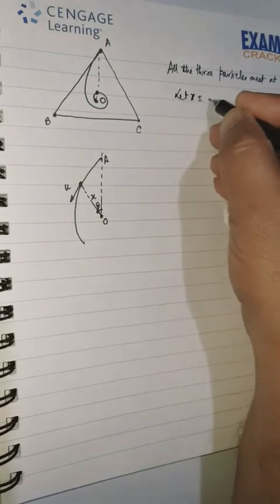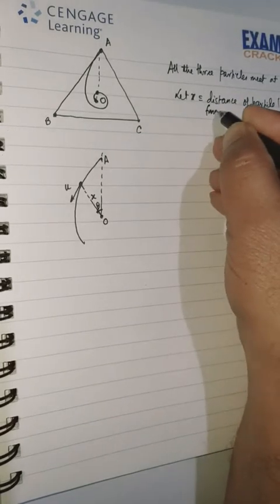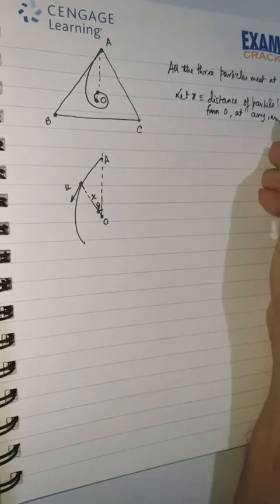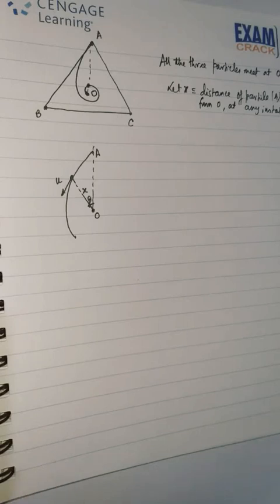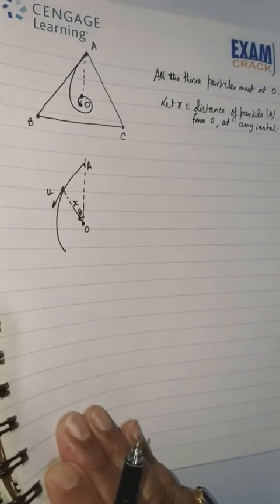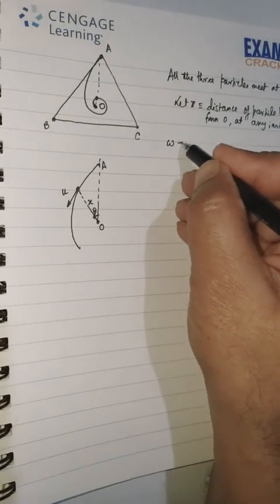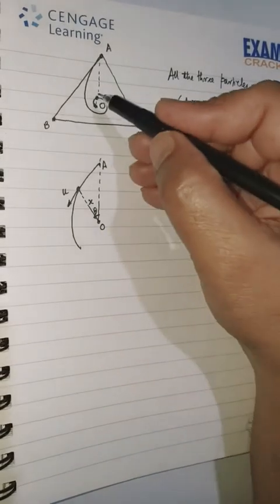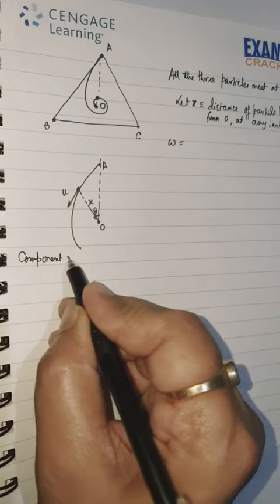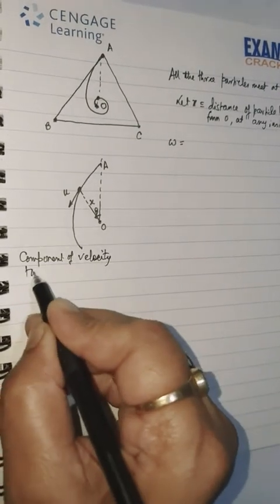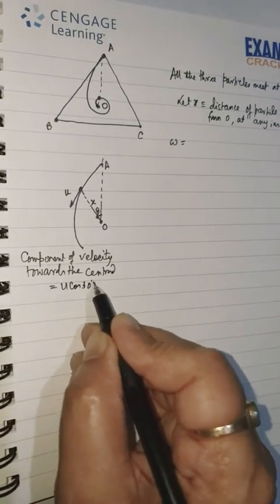Let X equal the distance of particle A from O at any instant. At a certain instant, the distance of particle A from point O is denoted by X. Then we can have ω equal to—see, whenever A, B, C move, the component of velocity, I can write here, the component of velocity towards the point O, that means the centroid, will always be U cos 30°.